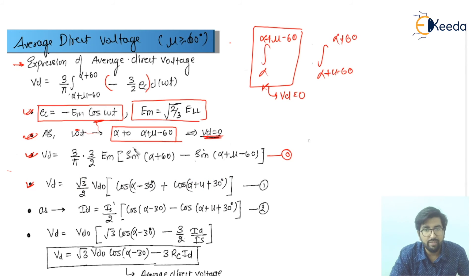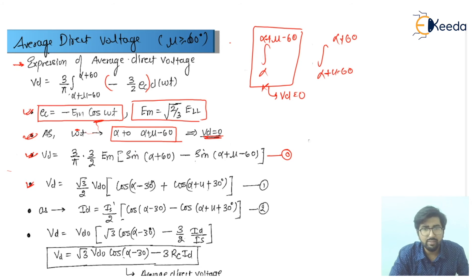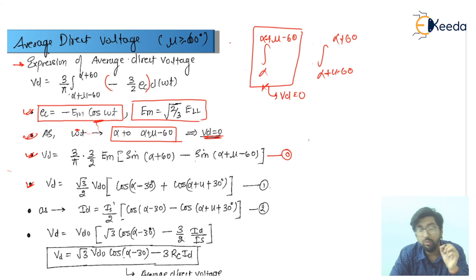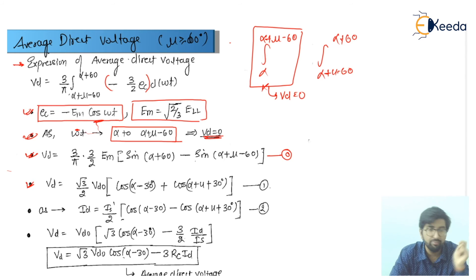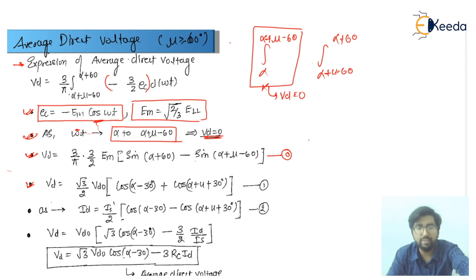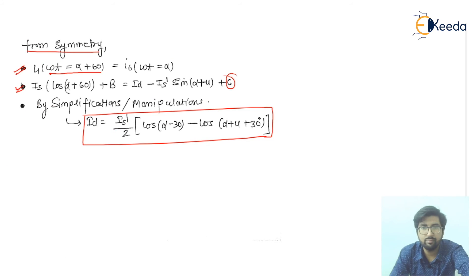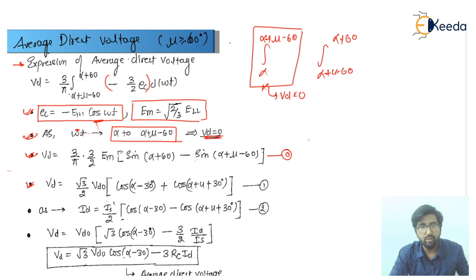Using the 90-degree angle conversion from sine to cosine, we arrive at equation number one: VD equals (root(3)/2)·VD0·[cos(alpha minus 30) plus cos(alpha plus mu plus 30)]. Now if I talk about the ID, which was discussed in the last lecture, we have IS·(1/2)·[cos(alpha minus 30) minus cos(alpha plus mu plus 30)].